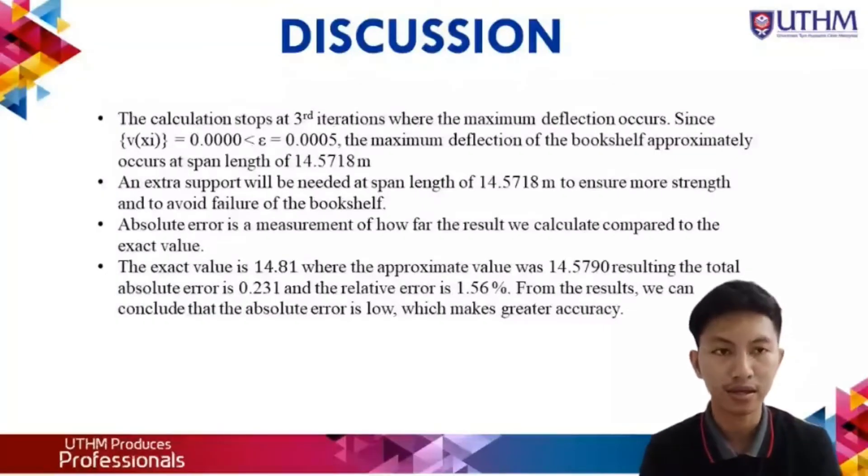For the discussion, the calculation stopped at the third iteration where the maximum deflection occurs, since the value of f(x_i) = 0.000 is less than 0.0005. The maximum deflection of the bookshelf approximately occurs at the span length of 14.5718 meters. An extra support will be needed at the span length of 14 meters to ensure more strength and avoid failure to the bookshelf.